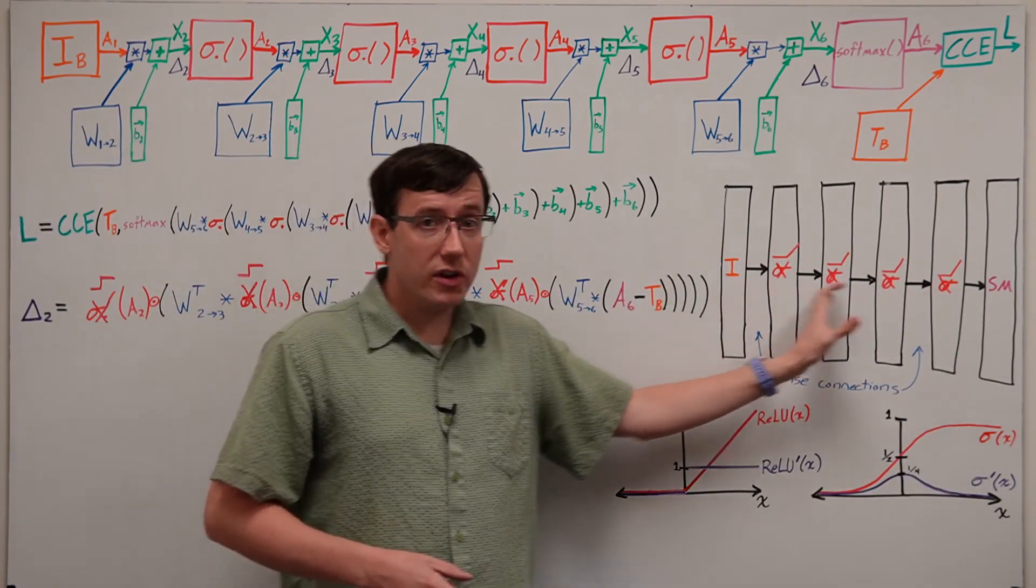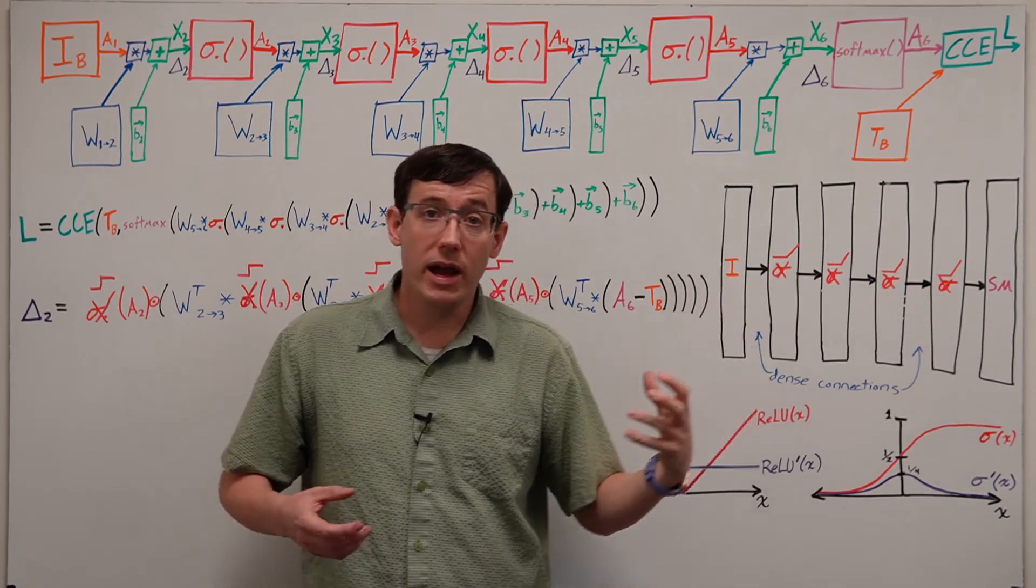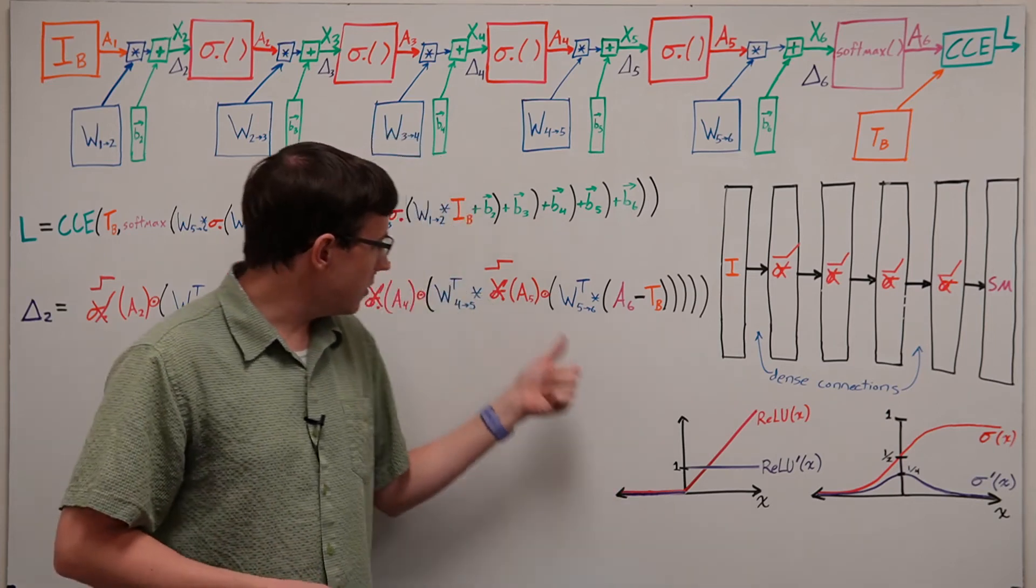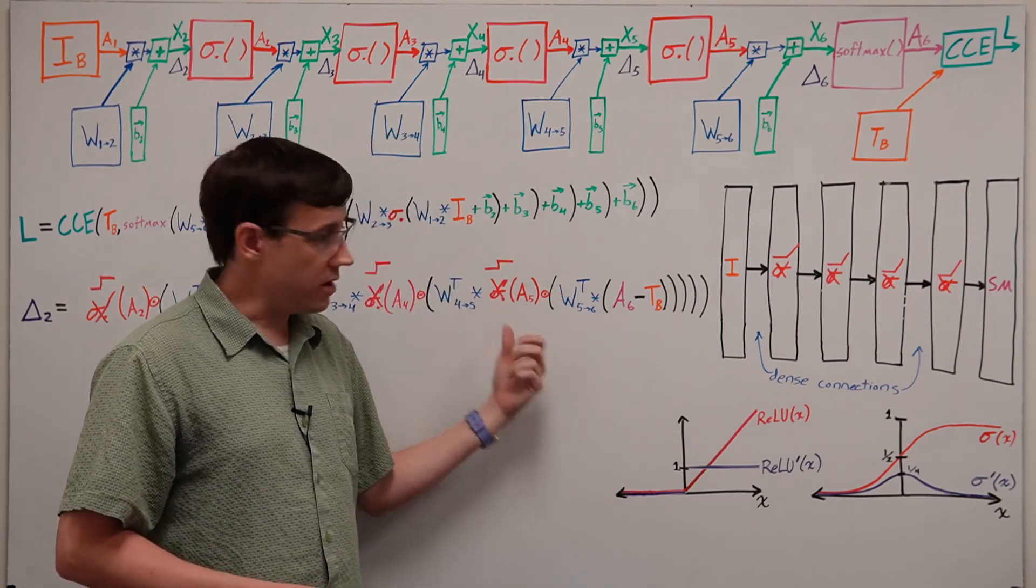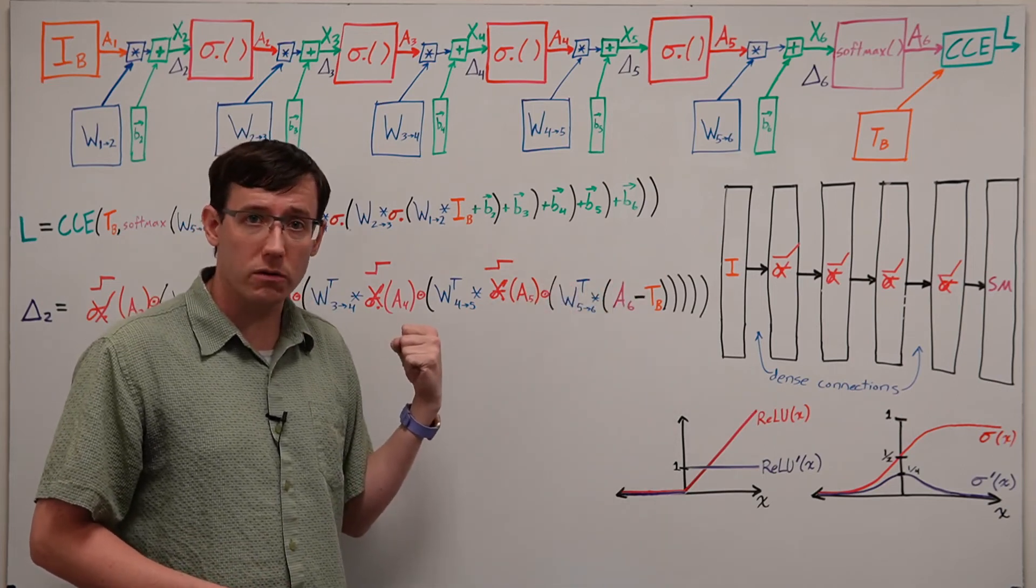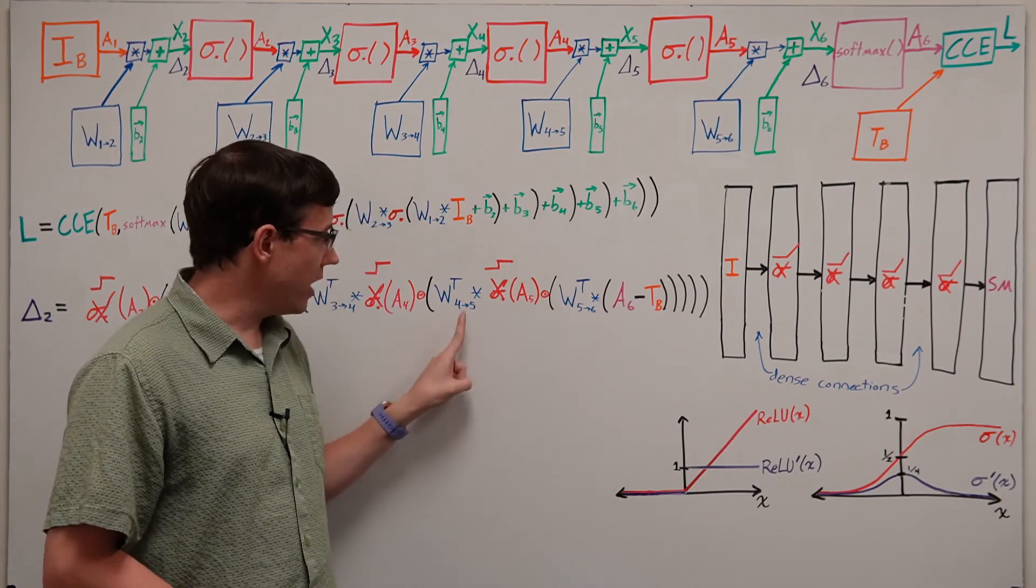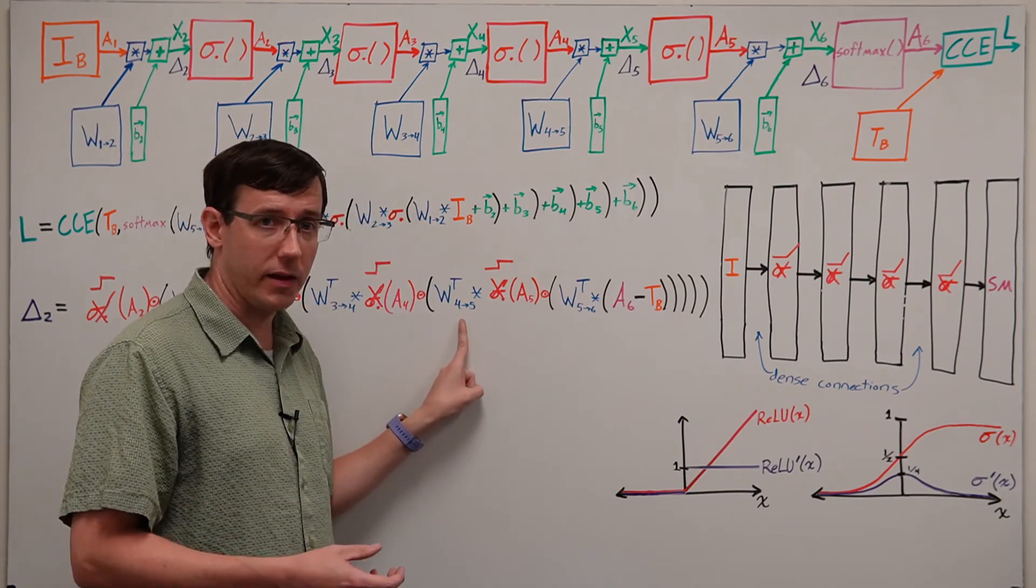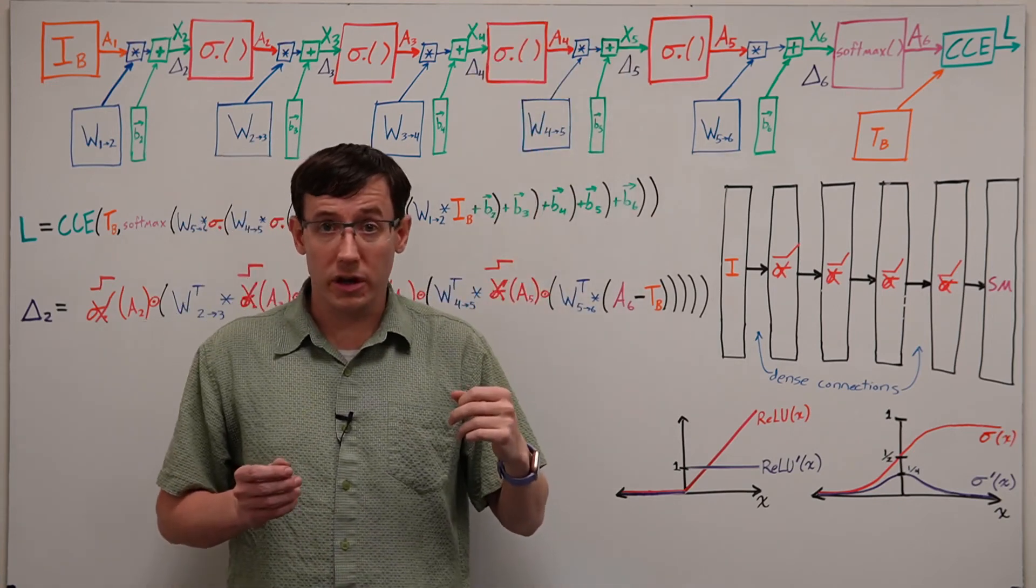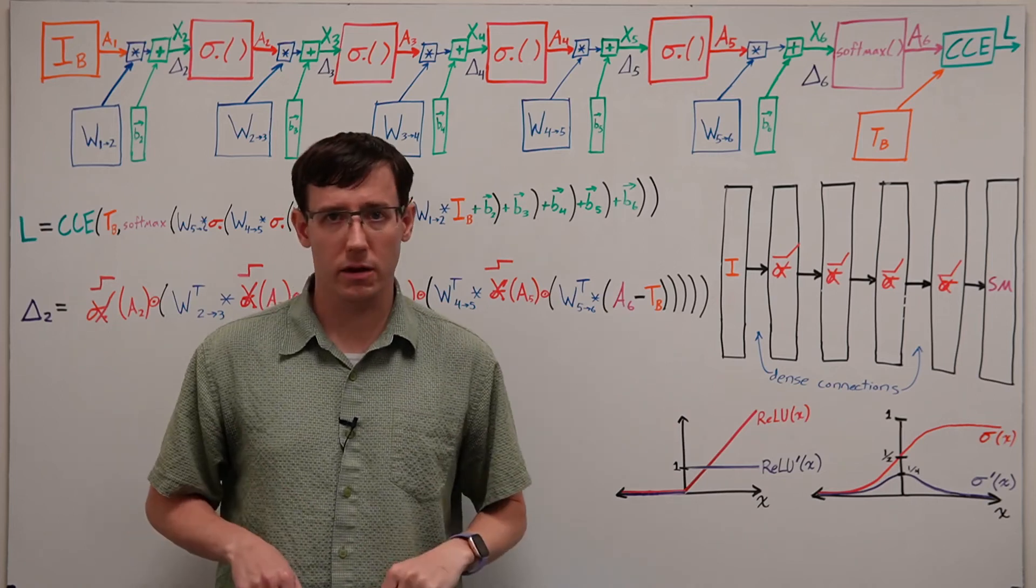But when we replace our sigmoid activations with rectifier linear units, we now have a potential problem in the other direction. Specifically because the ReLU derivative tends not to reduce the deltas as we go backwards, it's possible that if the weight matrices have particularly large values, then as we go backwards the deltas could get larger and larger. And this is known as exploding gradients.